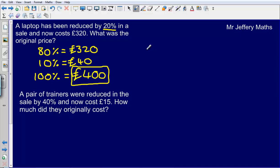We can check this as well if we want to. We can just do a quick check over here. So if I started with £400 we are told that this price here has been reduced by 20% so it has been decreased by 20% so we need to take 20% off.